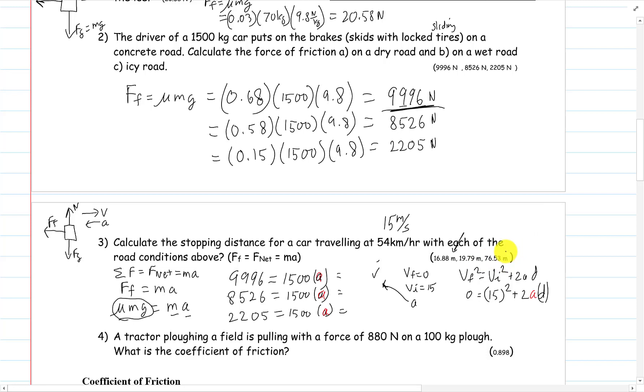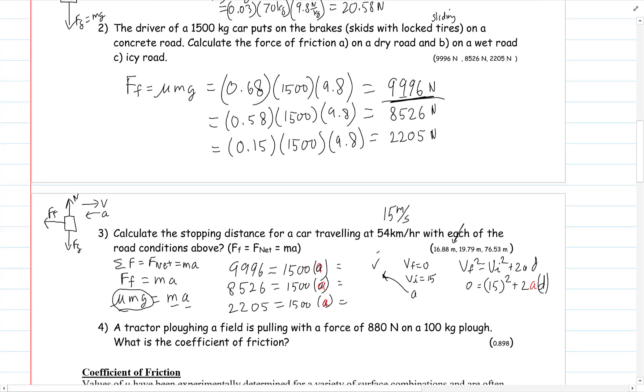A tractor plowing a field with a force of 880 newtons on a 100 kilogram plow. What's the coefficient of friction? He's pulling with a force of 880 newtons. And obviously something is resisting, that's going to be a frictional force. That means these two forces have to be equal because there's no talk about an acceleration. He's pulling along the field, so that means force of friction is equal to 880 newtons.